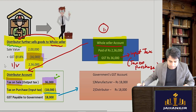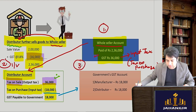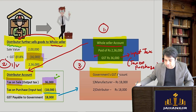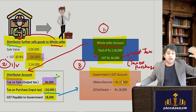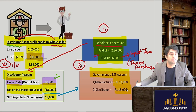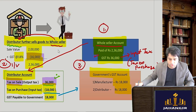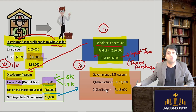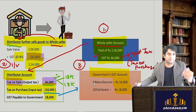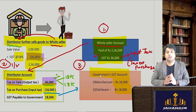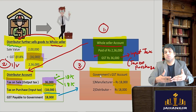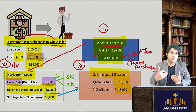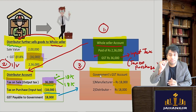In the government's account: the manufacturer paid 18,000 first, and now the distributor pays 18,000, so the government has received 36,000 in total — but in parts. The dealer saves money because whatever taxes he paid earlier, he takes a credit of that and only pays the balance to the government. The distributor's net GST paid from his own pocket is ultimately zero.